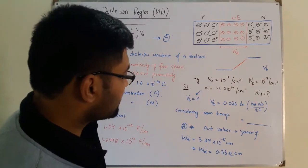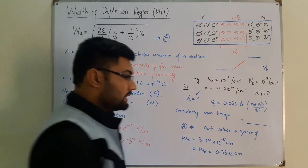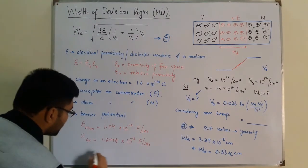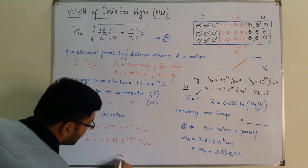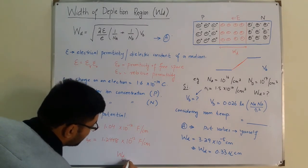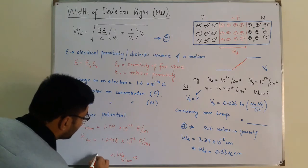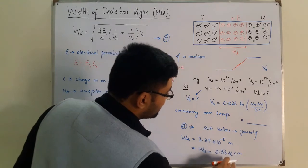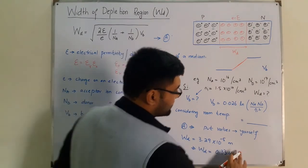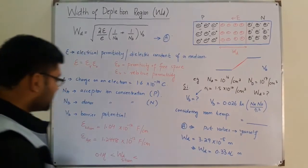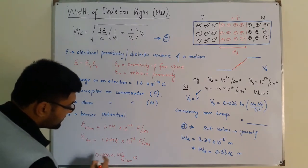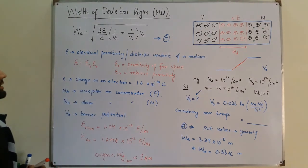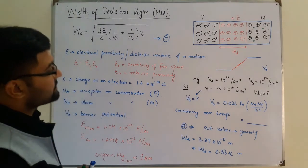You should know, for information, that the width of the depletion region for a silicon material lies within the range of 0.1 micrometer to 1 micrometer. This was in meters, not micro centimeter, but micrometer. This is the range of a silicon width of depletion region. This is just a formula. You need to have an idea.